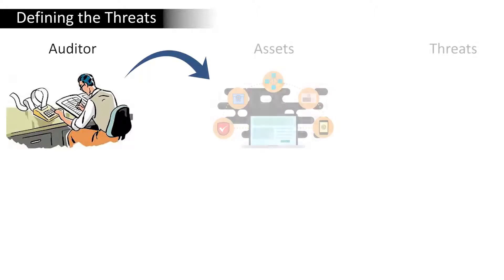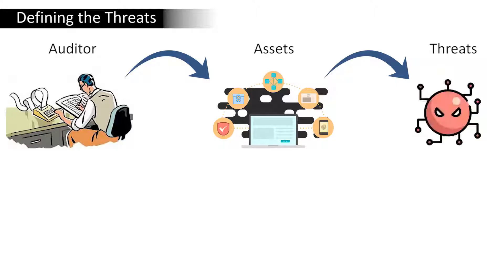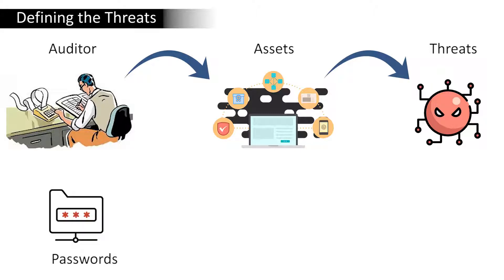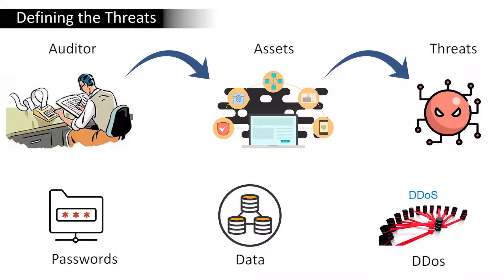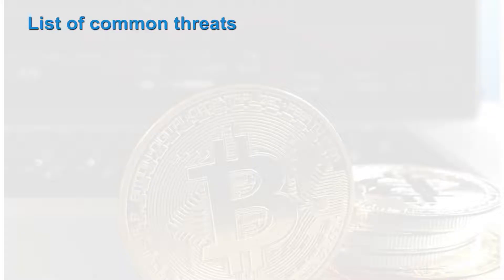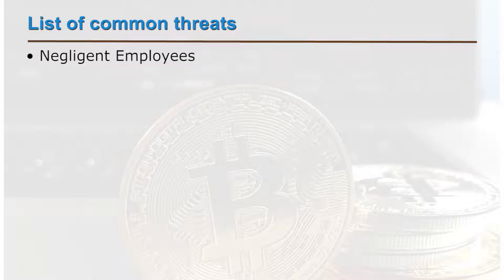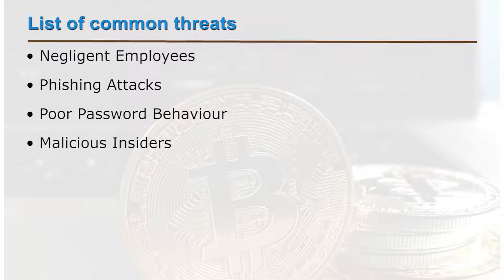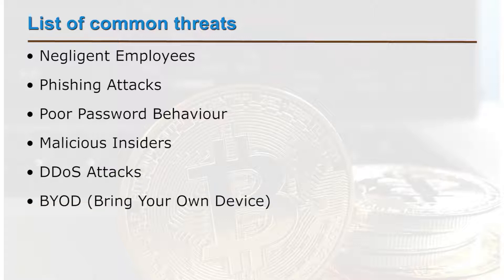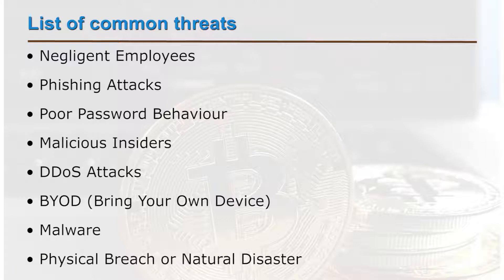The second step is defining the threats. Taking into account the list of valuable assets, a corresponding list of potential threats to those assets must be written down. This can range from employee password issues and protecting sensitive data to DDoS attacks, and can even include physical breaches or damage caused by a natural disaster. Common threats include negligent employees, phishing attacks, poor password behaviour, malicious insiders, DDoS attacks, bring-your-own-device risks, malware, and physical breaches or natural disasters.